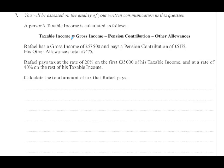Your gross income is the total amount that you're paid. But out of that comes your pension contribution, which isn't taxable, and other allowances, which aren't taxable. That's why we actually have to deduct those from the gross income.